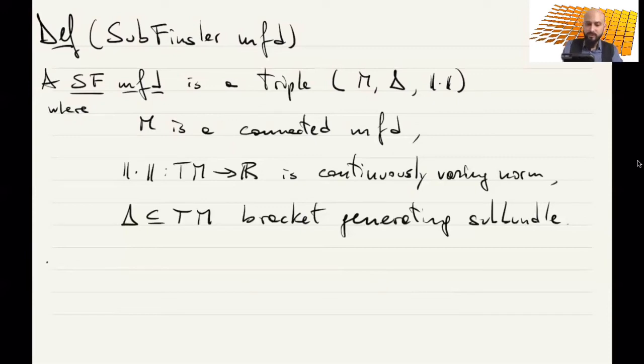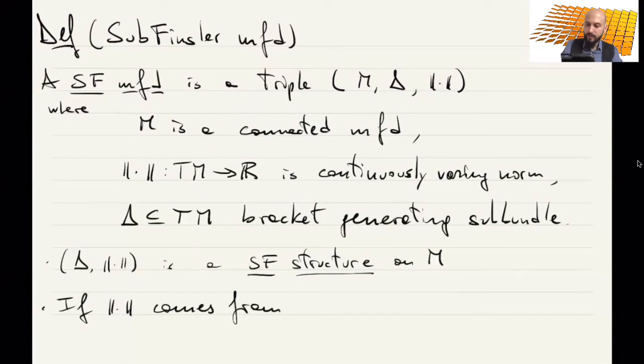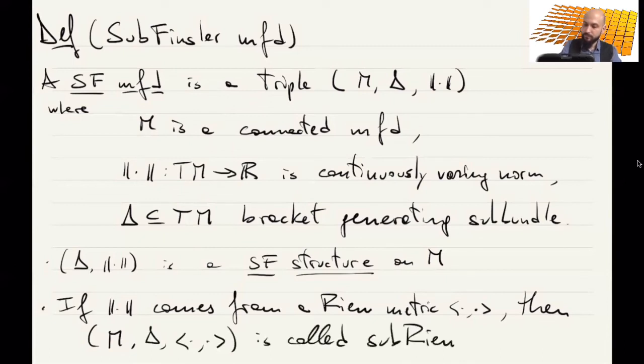So just the pair delta and the norm is called a Sub-Finsler structure on M. And very importantly, if the norm comes from a Riemannian metric, a scalar product, smoothly varying scalar product, then M delta and this scalar product is called Sub-Riemannian metric.